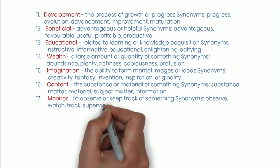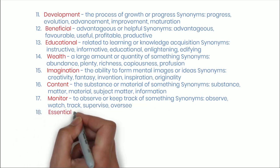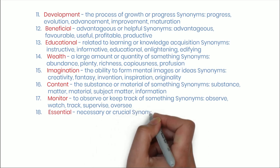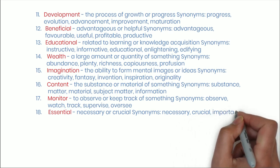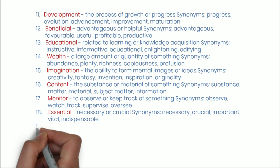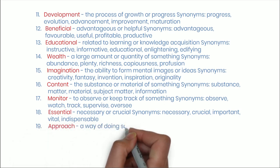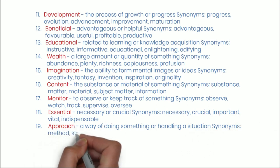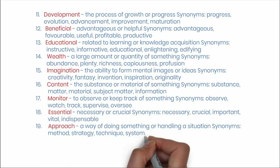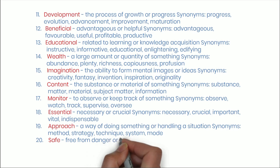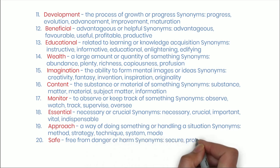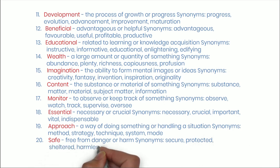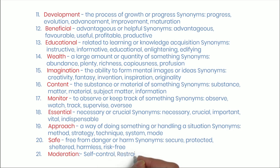Number eighteen: Essential — necessary or crucial. Synonyms: necessary, crucial, important, vital, indispensable. Number nineteen: Approach — a way of doing something or handling a situation. Synonyms: method, strategy, technique, system, mode. Number twenty: Safe — free from danger or harm. Synonyms: secure, protected, sheltered, harmless, risk-free. Number twenty-one: Moderation — self-control, restraint, temperance, moderateness.